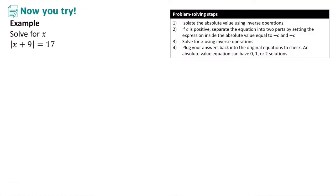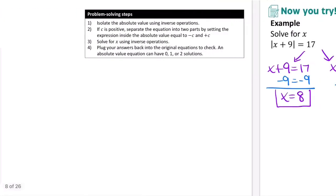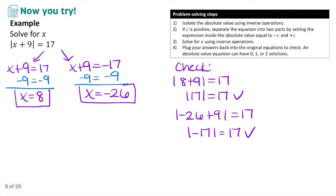You can go ahead and pause the video to try this example on your own. In this example, we have the absolute value equal to a positive number, 17. Separating into two equations gives x + 9 = 17 and x + 9 = negative 17, which gives solutions x = 8 and x = negative 26. Both check out in the original equation.